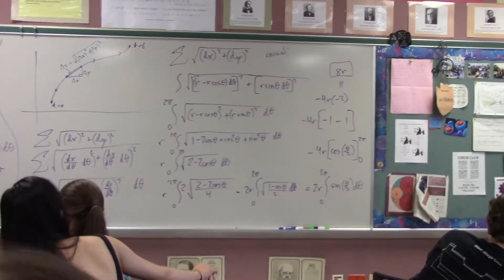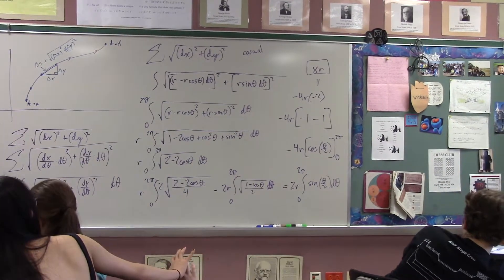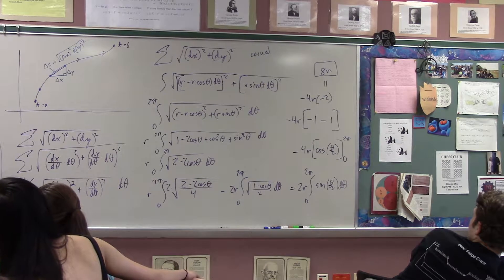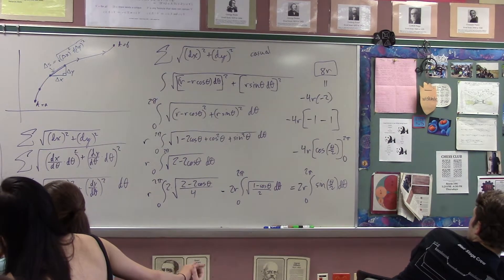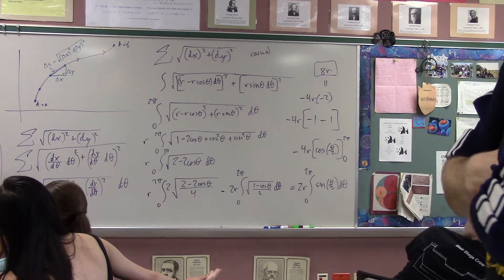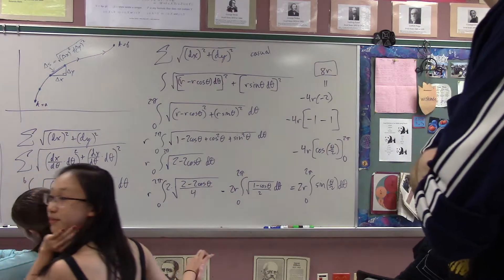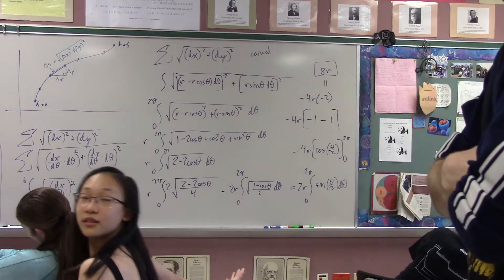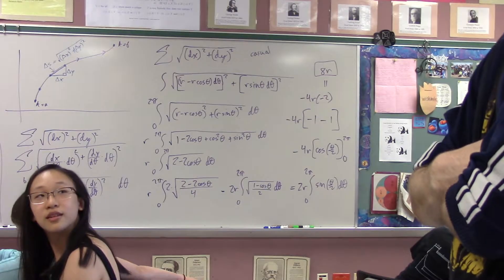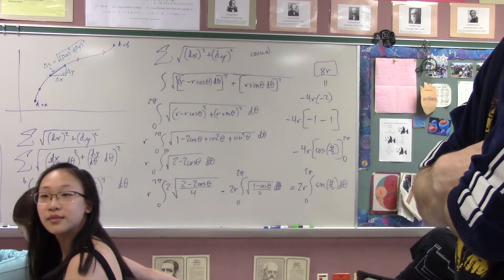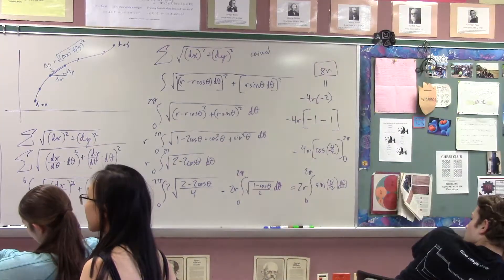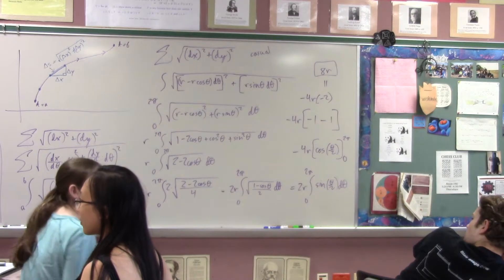Is there a reason why that makes sense? Just the length of the cycloid is 8 radii — that's pretty awesome. How much time is left? 5 minutes. Perfect.